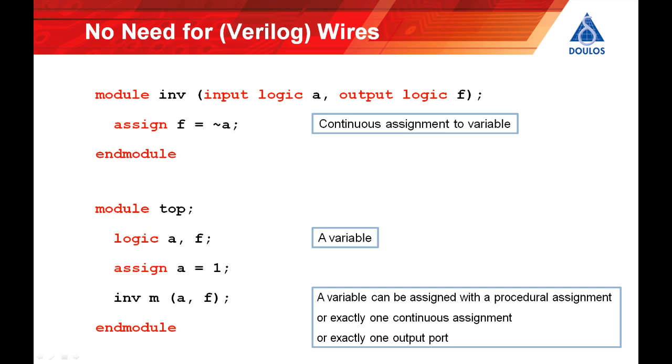So the new rule is that a variable can be assigned using a procedural assignment which was always the case but can now instead be assigned by one continuous assignment or by being connected to one output port. That makes things much simpler.